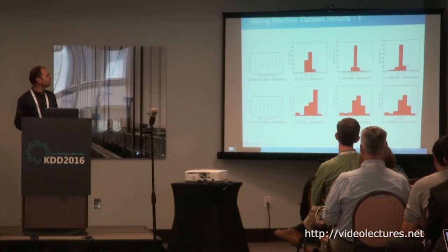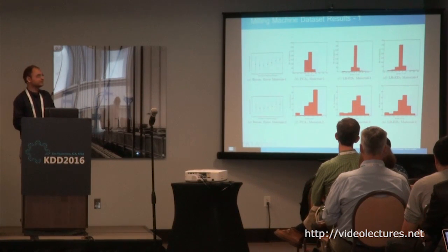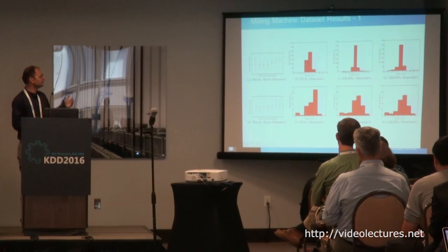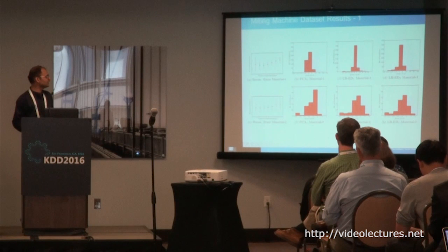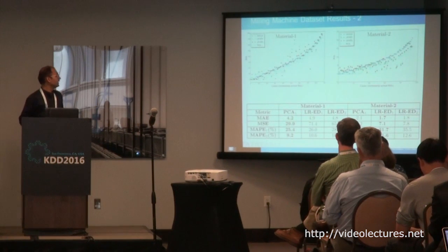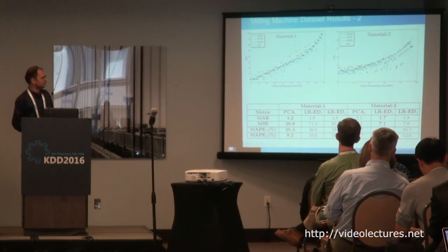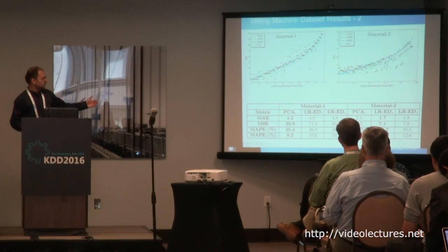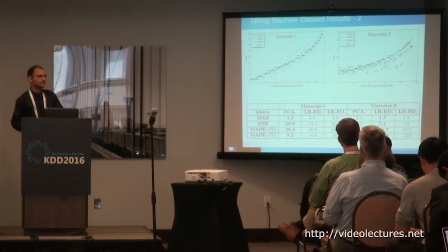The second dataset is the milling machine dataset. Here again, we see that as the life of an instance passes, the reconstruction error increases. For most error values, they lie very close to zero: in the interval minus 4 to 6 for the first material type in the dataset, and minus 3 to 1 for the second material type. The actual RUL estimates are compared against the predicted ones, and here again the encoder-decoder based model performs better compared to the exponential assumption based model.